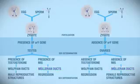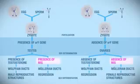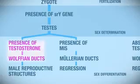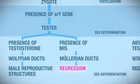Whether the sex structures develop into male or female is dependent on the presence or absence of two hormones. These hormones are called testosterone and Mullerian inhibiting substance, abbreviated MIS, and are produced by the testes. Testosterone acts on the Wolfian ducts to promote the development of male reproductive structures. MIS acts on Mullerian ducts, preventing the development of female organs. Thus, the presence of testosterone or MIS will cause the fetus to develop into a male.